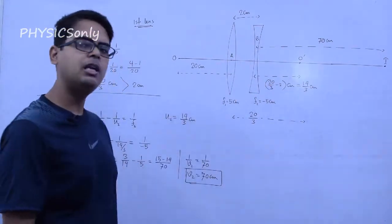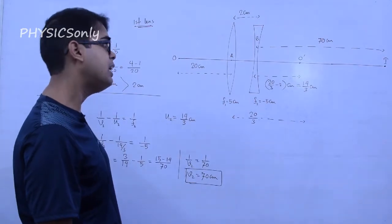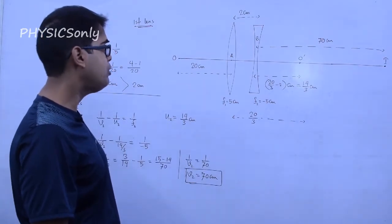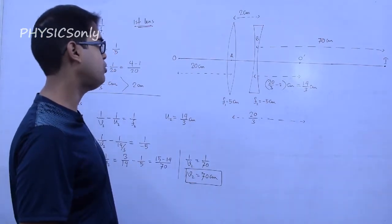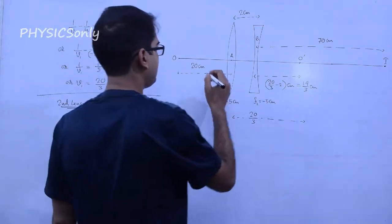This image is actually a real image. V2 is positive, which means the image forms on the transmission side. Why is it real? We need to understand this from the sign convention and the exact ray diagram.